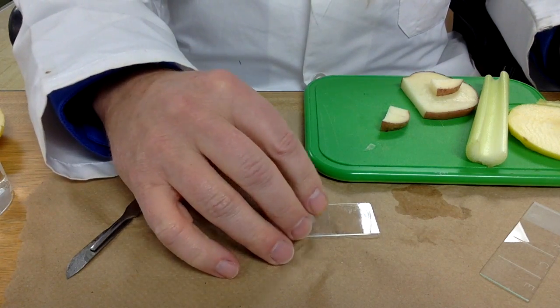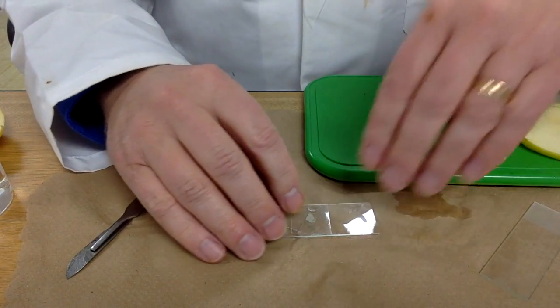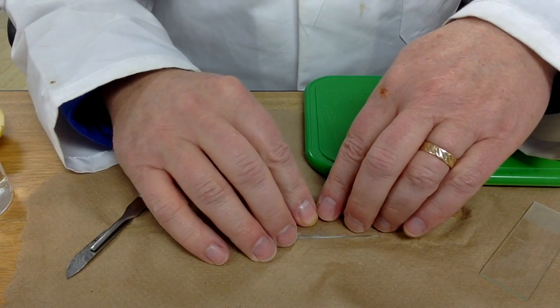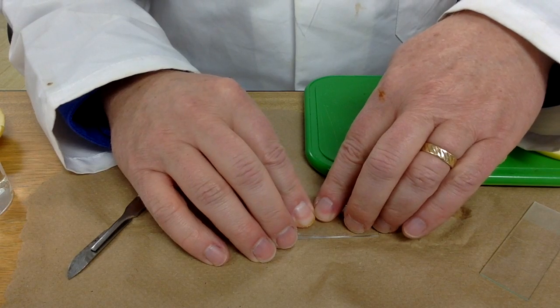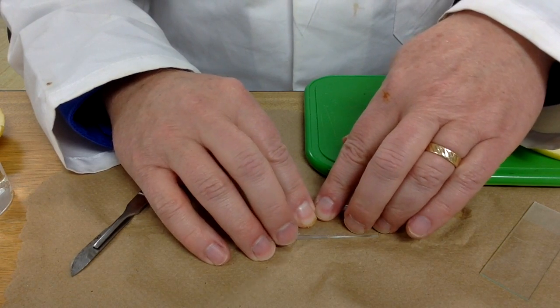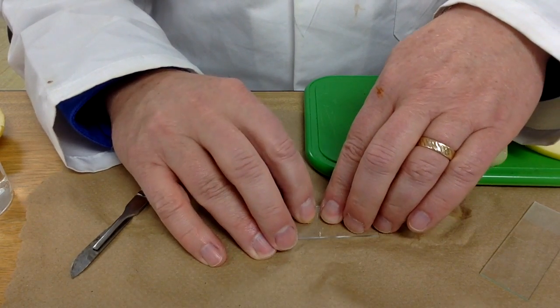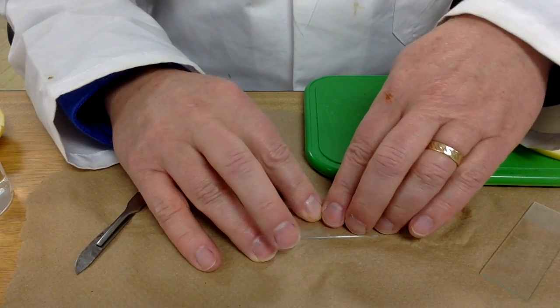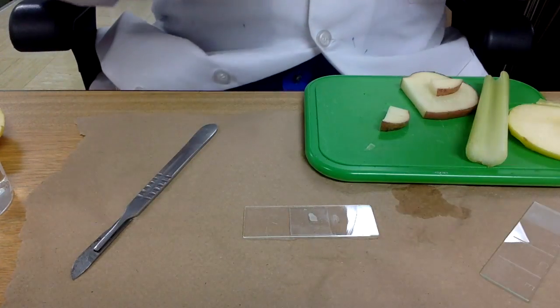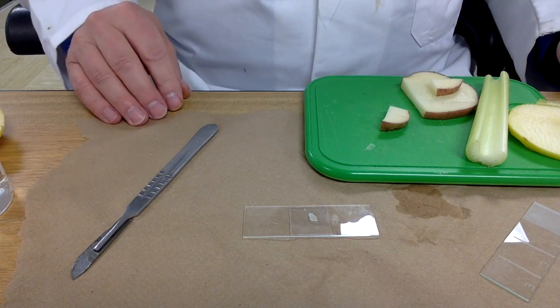And then with something as soft as potato, we can push down on that, right on the cover slip, and spread some cells out a little bit. That is ready for viewing under the microscope.